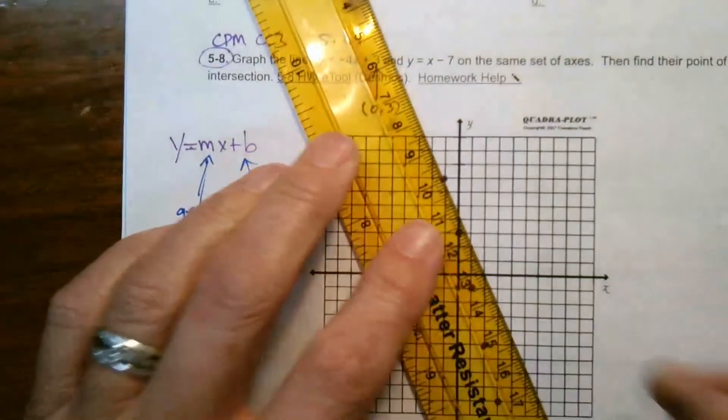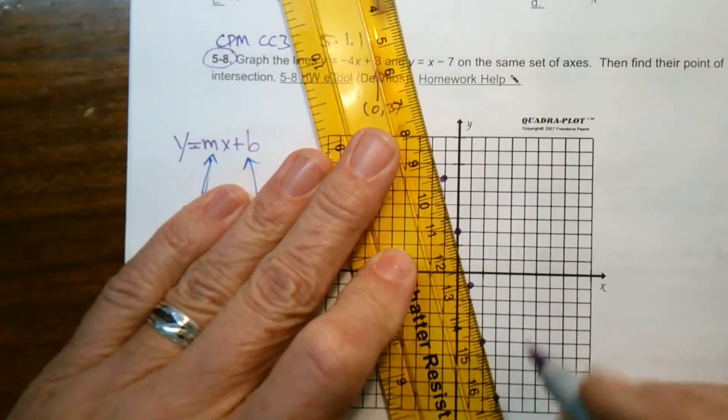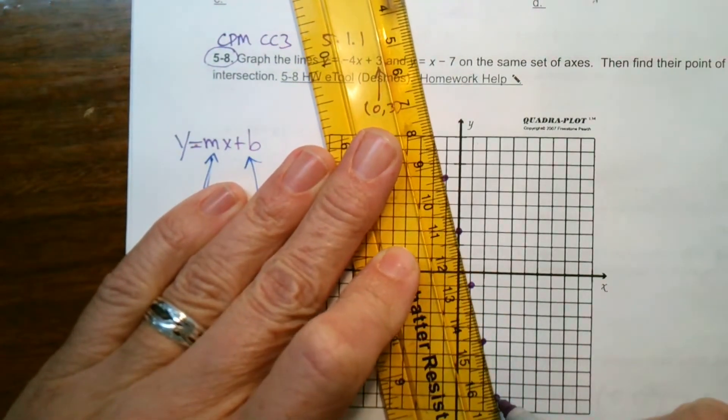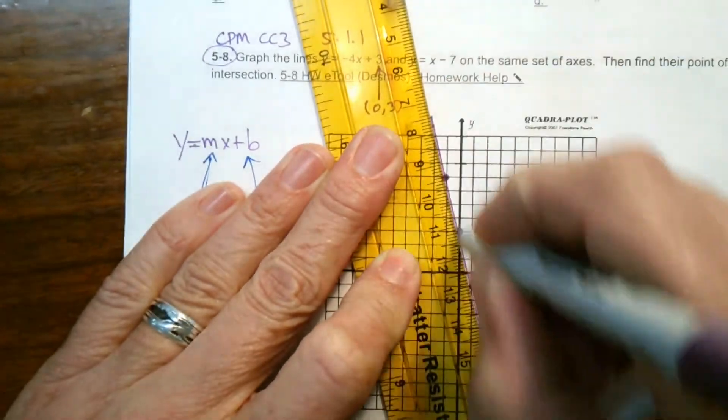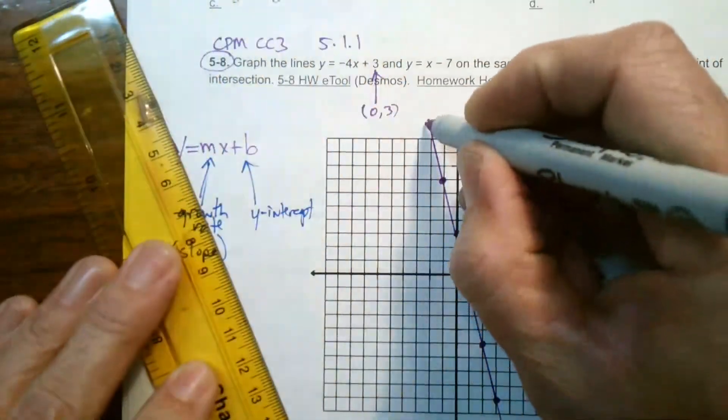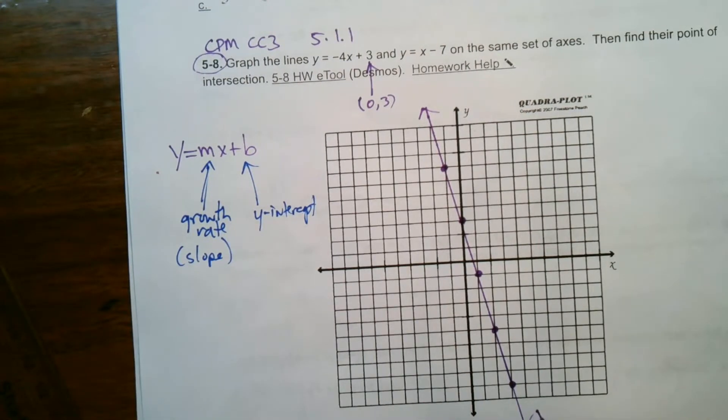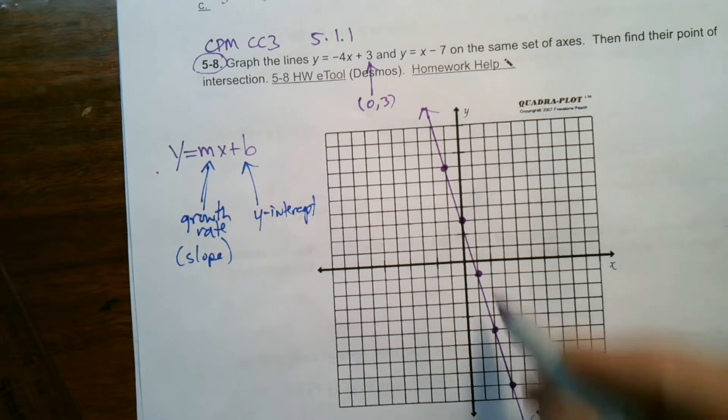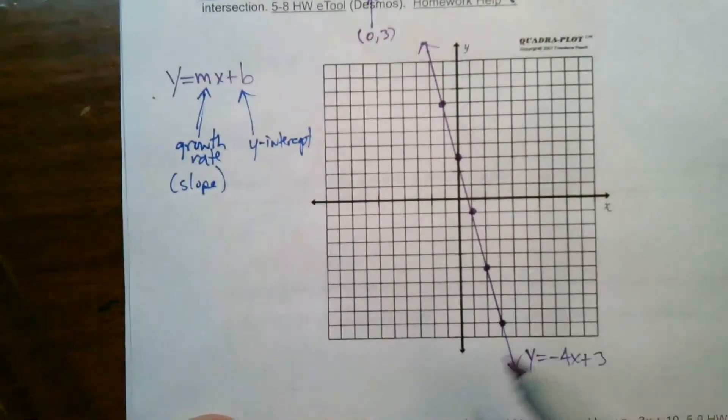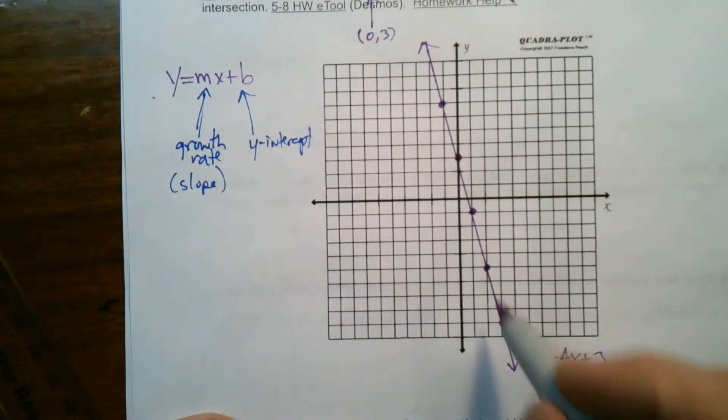So, let's go ahead and draw my line. Remember, we draw the line because we're showing all the possible solutions to this equation. So, this solid line, connect those dots, throw some arrows because it says the solutions continue. And then I'll label it. y is equal to negative 4x plus 3. So, this line, keep in mind, represents all the possible solutions that make this equation true.